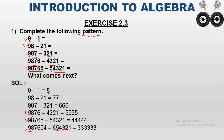So the answers are: 9 minus 1 is 8, 98 minus 21 is 77. The first line has a one-digit answer: 8. The second line has a two-digit answer: 77. The third line gives 666, the fourth line gives 5555, the fifth line gives 44444, and the sixth line gives 333333.